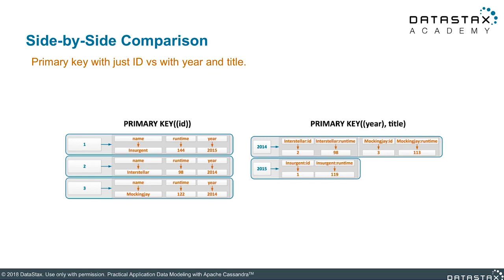With partition keys 1, 2, 3, each one of those values could be on a separate node, but there's only one record per partition key — one row. In the case where we have a partition key and a clustering column, now you have multiple rows inside of a single partition. 2014 and 2015 only had one movie in them, so they only have one row. The storage engine is very different, and ordering is really the important thing in the clustering column. This is what imparts order to the values you store in your data model.